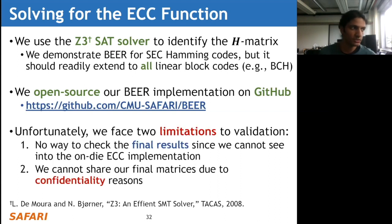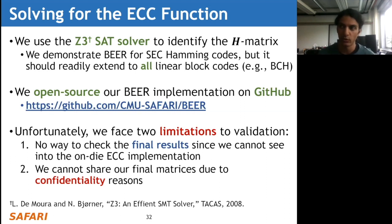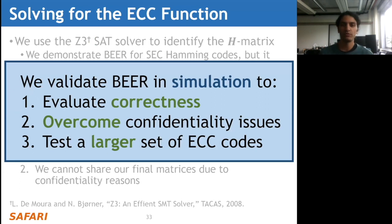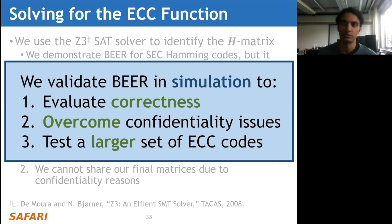We face two limitations to validation. First, we have no way to check the final results because we cannot see into the on-die ECC implementation - the ground truth is invisible since we'd have to tear open the chip and inspect the circuitry manually. Second, we're not able to share our final H matrices because of confidentiality reasons with the manufacturers. To overcome these limitations, we evaluate BEER in simulation - this allows us to evaluate correctness because we do know the ground truth in simulation, and to test a much larger set of ECC codes. Instead of just three 128-bit ECC codes, we can test a large variety in simulation.